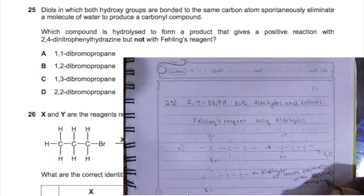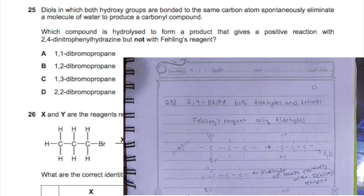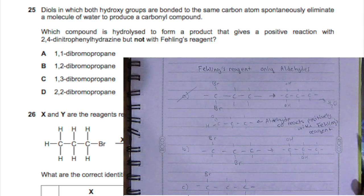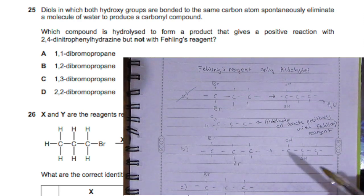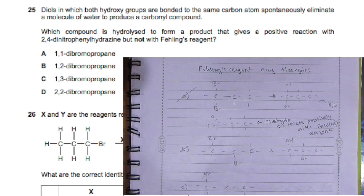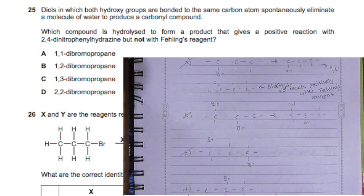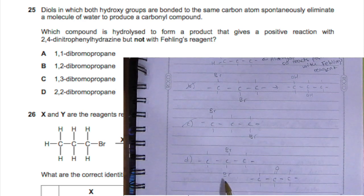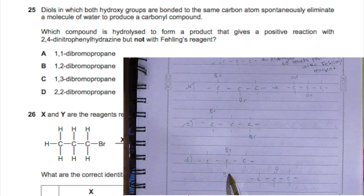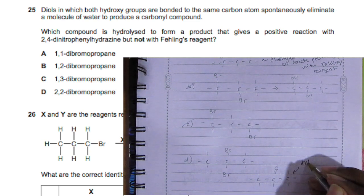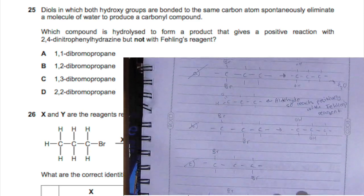So we're trying to find what does not react with it, and that would have to be a ketone. Now of course for B and C, those OHs aren't on the same carbon, so they can't eliminate and form a molecule of water and produce a carbonyl compound. So B and C are just out. But you see D forms a ketone, so that means it reacts positively with the 2,4-D and pH and not with the Fehling's reagent. So D is just your answer for question 25.